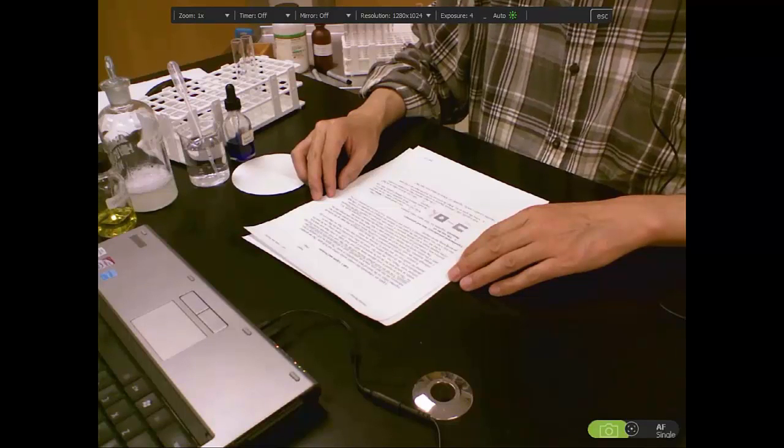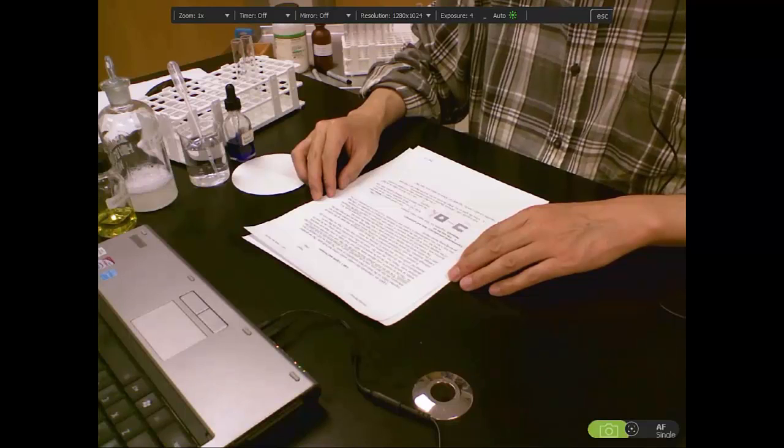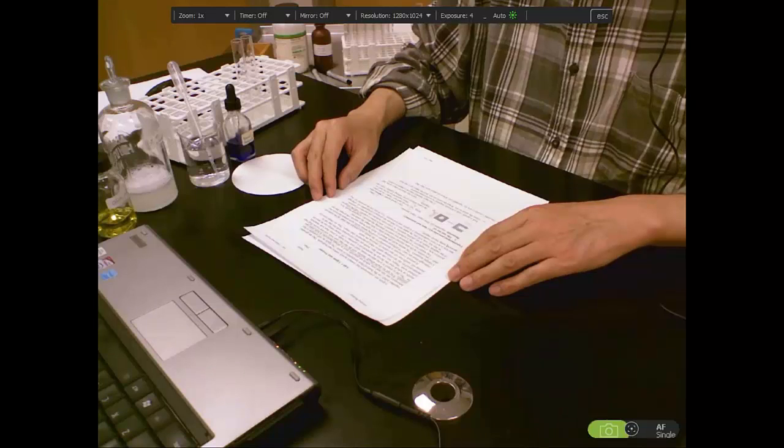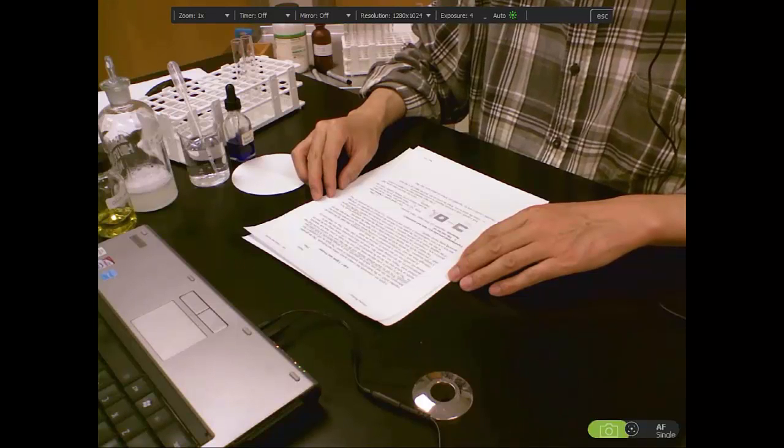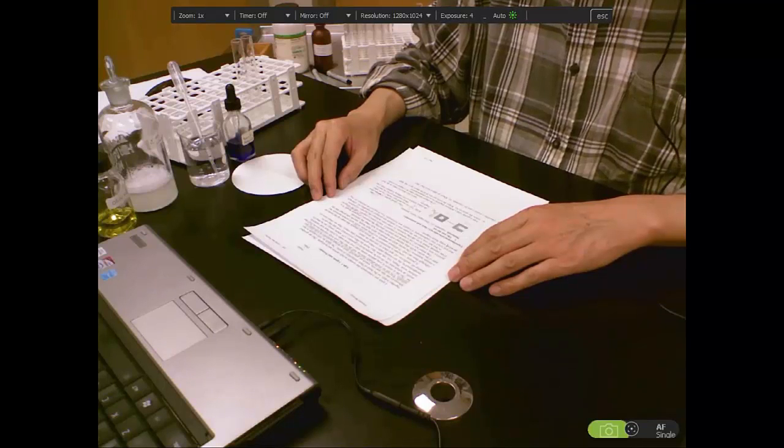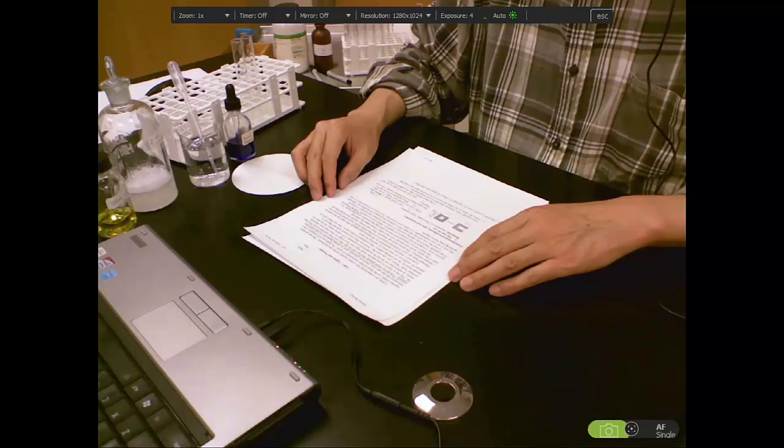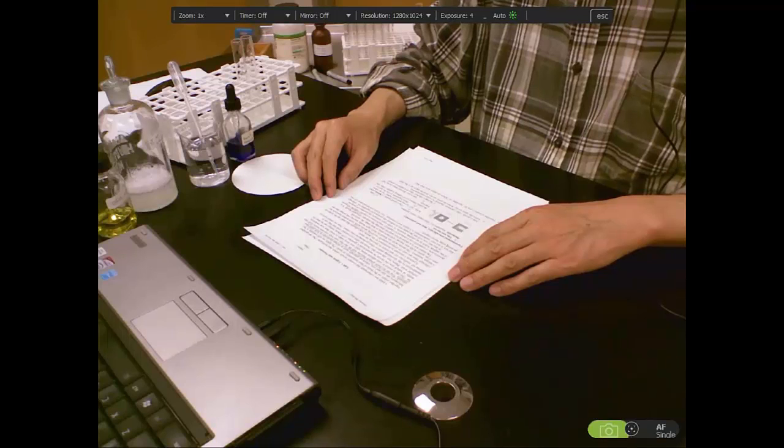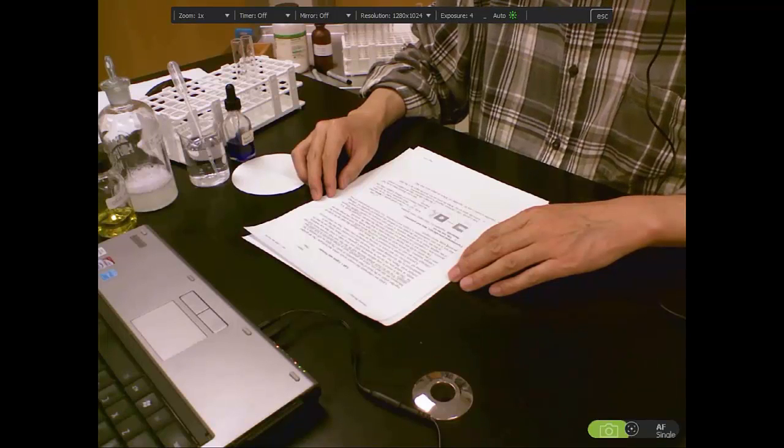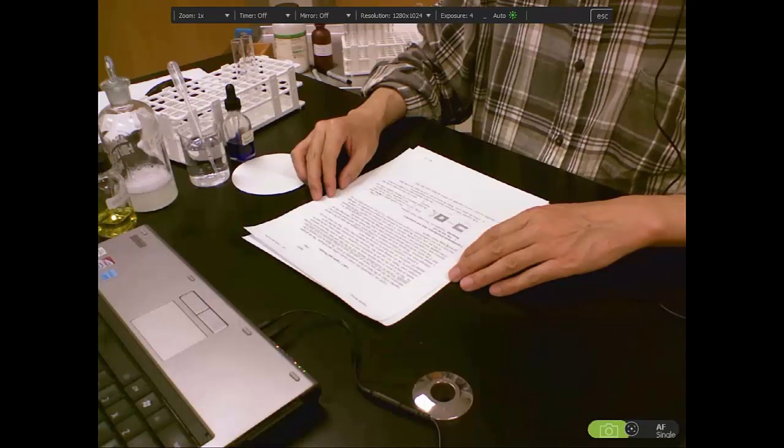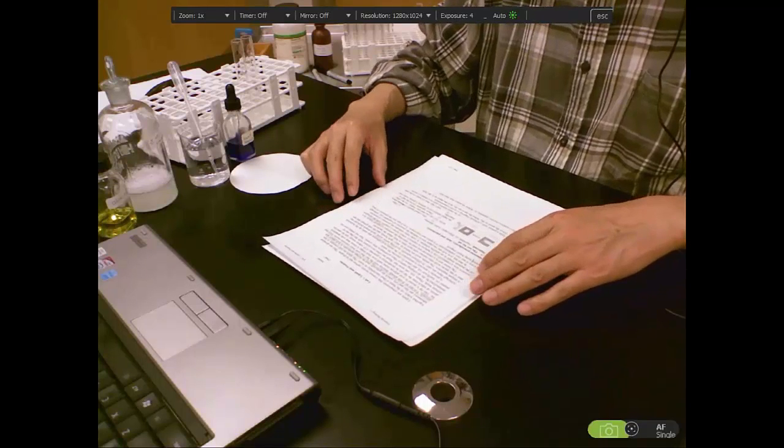In today's lab, the Buret compound will reduce copper-2 to copper-1, generating violet color that indicates the presence of protein. Today's lab has two objectives. First is to use a paper test to detect the presence of vegetable oil. Second is to detect the presence of protein using Buret reagent. Let's look at the first part of today's lab.